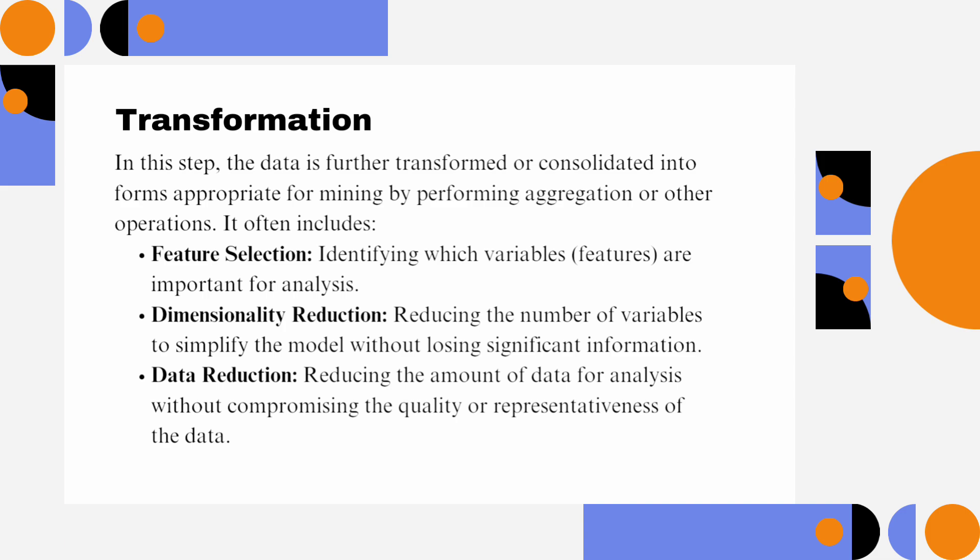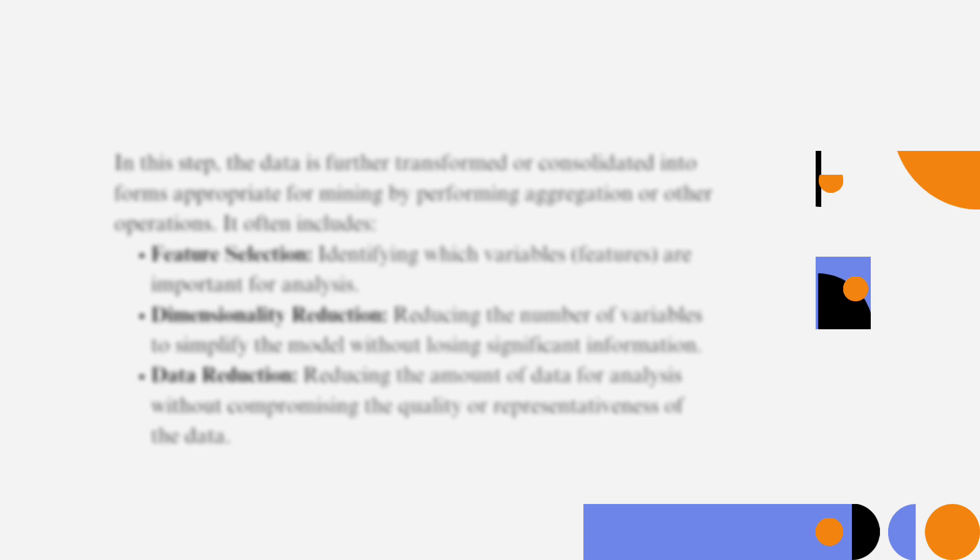Transformation: In this step, the data is further transformed or consolidated into forms appropriate for mining by performing aggregation or other operations. It often includes feature selection: identifying which variables or features are important for analysis. Dimensionality reduction: reducing the number of variables to simplify the model without losing significant information. Data reduction: reducing the amount of data for analysis without compromising the quality or representativeness of the data.